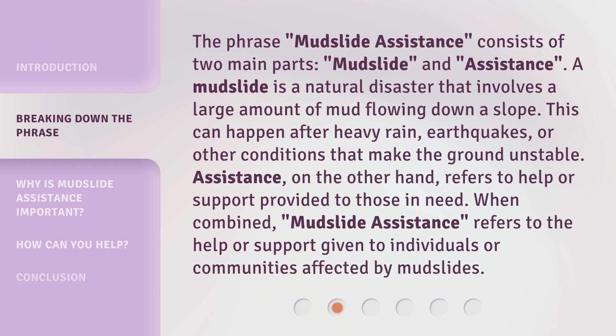The phrase 'mudslide assistance' consists of two main parts: mudslide and assistance. A mudslide is a natural disaster that involves a large amount of mud flowing down a slope. This can happen after heavy rain, earthquakes, or other conditions that make the ground unstable. Assistance, on the other hand, refers to help or support provided to those in need. When combined, mudslide assistance refers to the help or support given to individuals or communities affected by mudslides.